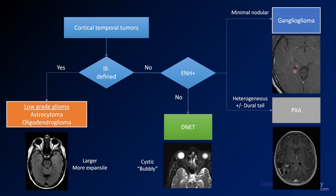If you do have minimal nodular enhancement, and you have a lesion in the medial temporal lobe with a little cystic portion and a little nodular portion, think about ganglioglioma. If you see lesions that are more heterogeneous and maybe have a dural tail like you see here, think about PXA, or pleomorphic xanthoastrocytoma.